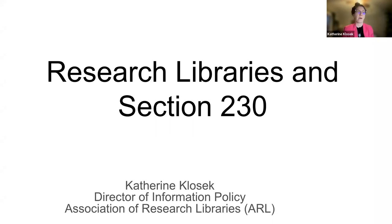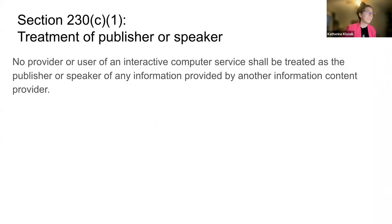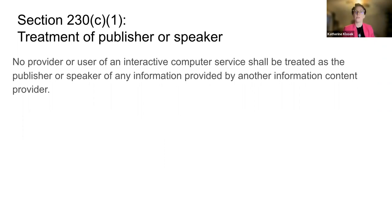Let's get started by talking about what the law actually says and how it functions. Section 230 is critical to an open internet, and this can't be overstated. Section 230 immunizes interactive computer services, including libraries, from liability for content that their users post, including illegal content, with some exceptions. And it does this primarily through two clauses.